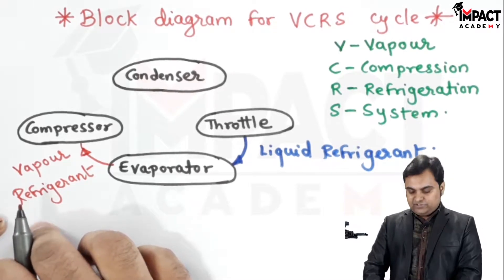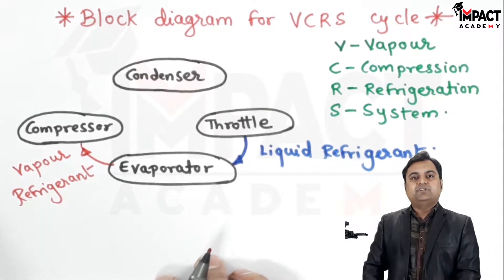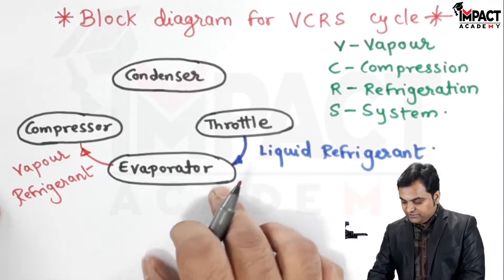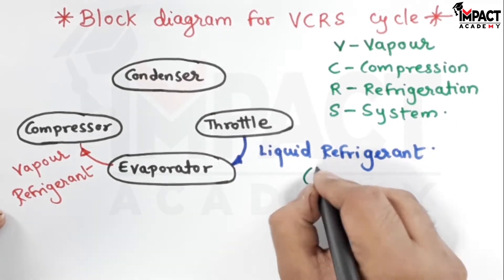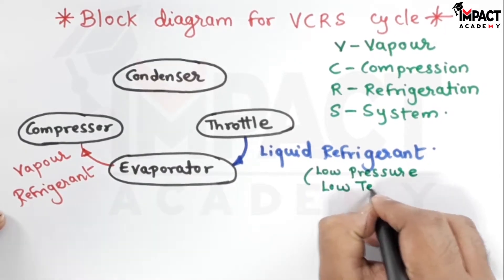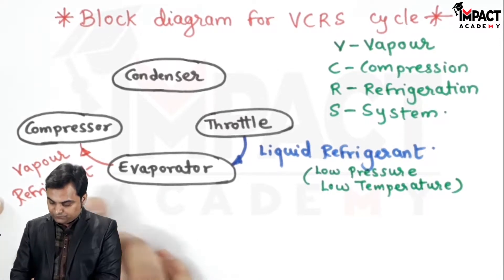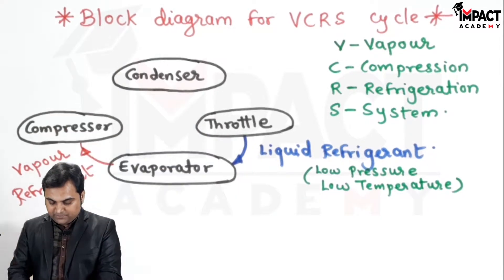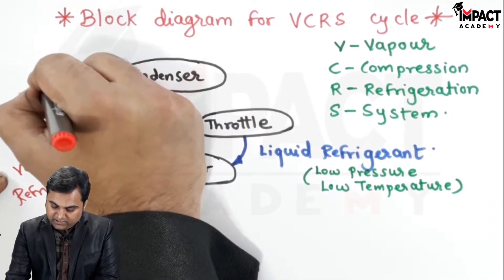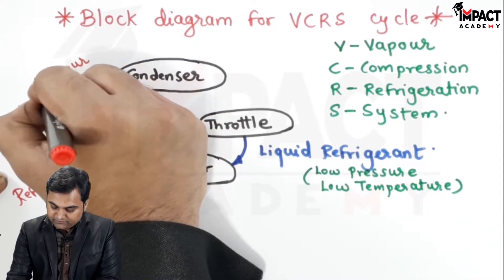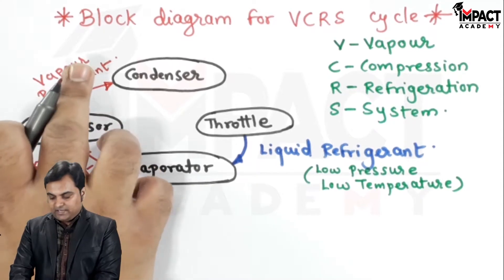This vapor refrigerant gets compressed inside the compressor where its pressure and temperature is raised. When the refrigerant is coming into the evaporator it is at low pressure and low temperature. Then when it comes out of the compressor after the compression process, we again have vapor refrigerant.